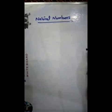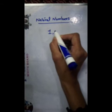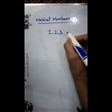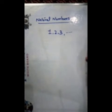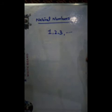First of all, let's know about Natural Numbers. Dear students, counting numbers starting from 1, 2, 3 and so on are called Natural Numbers. Remember students, counting numbers start from which number? 1. So these numbers are called Natural Numbers.